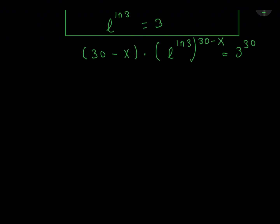We'll have 30 minus x. If we use log laws, we'll have 30 minus x ln 3.